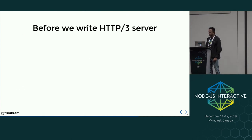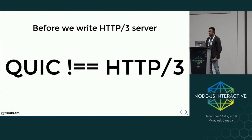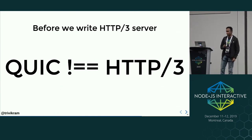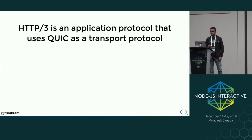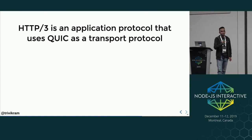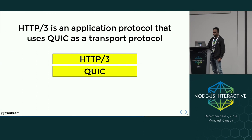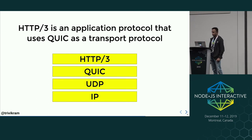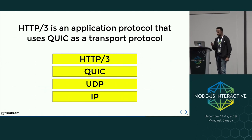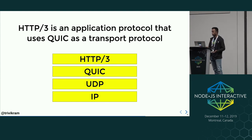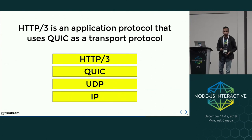Before we write the HTTP/3 server, remember: QUIC is not equal to HTTP. These terms will be used interchangeably, but they are not the same. HTTP is an application protocol which uses QUIC as a transport protocol. You have HTTP/3 on top of QUIC, then UDP, then IP. The Node.js implementation will let you create your own alternative protocols on top of QUIC — for example, the inspector protocol currently uses WebSockets but may switch to QUIC, and DNS might also use QUIC.